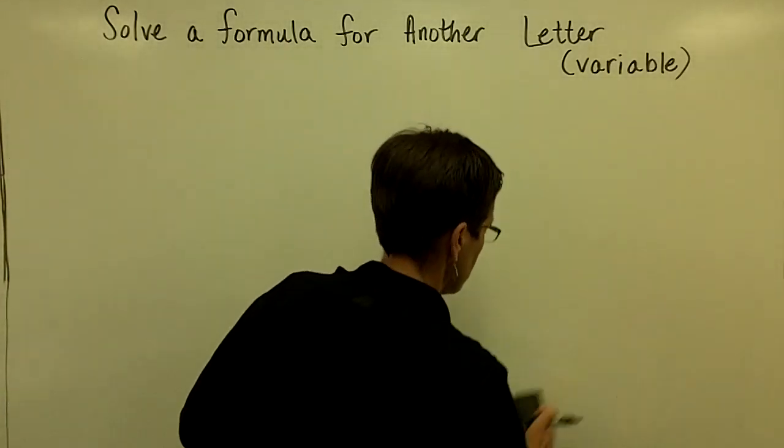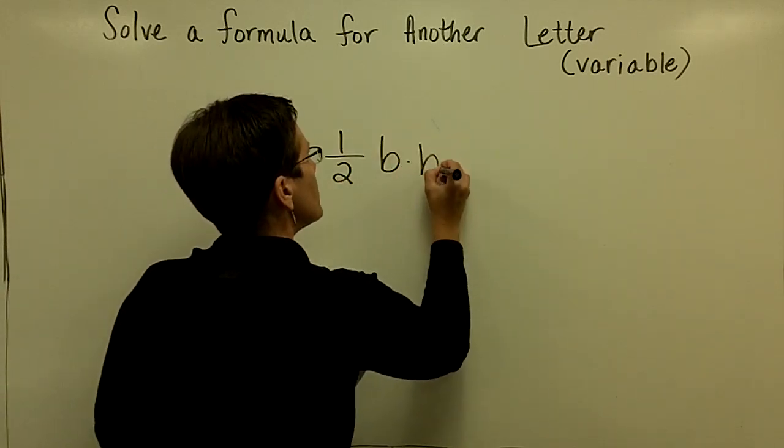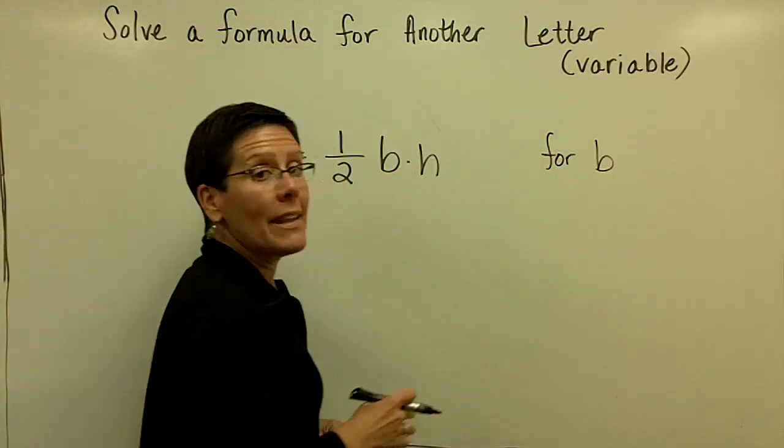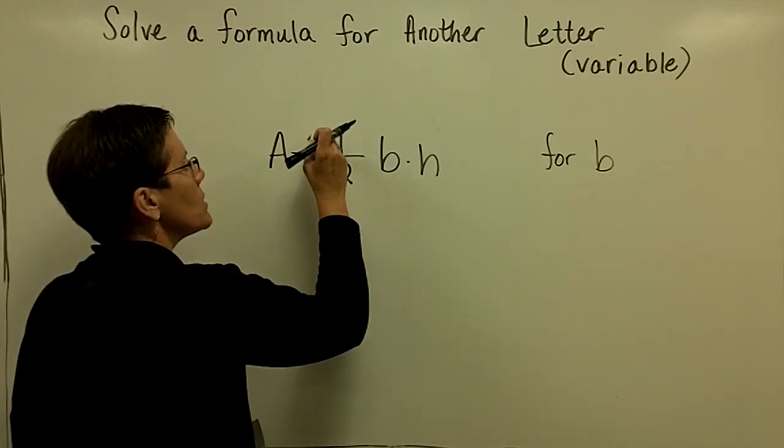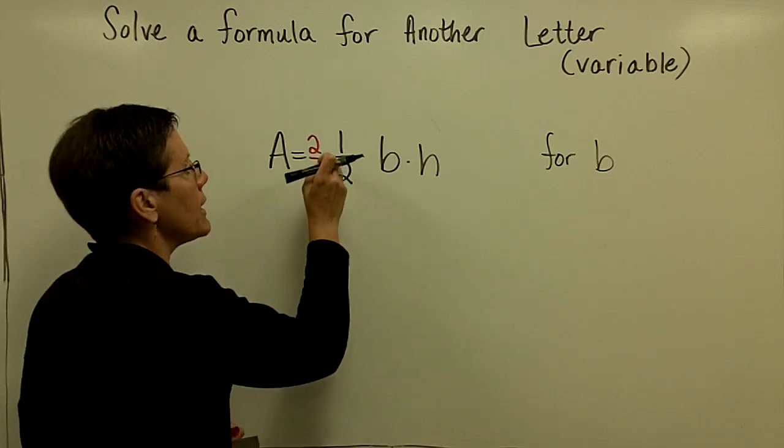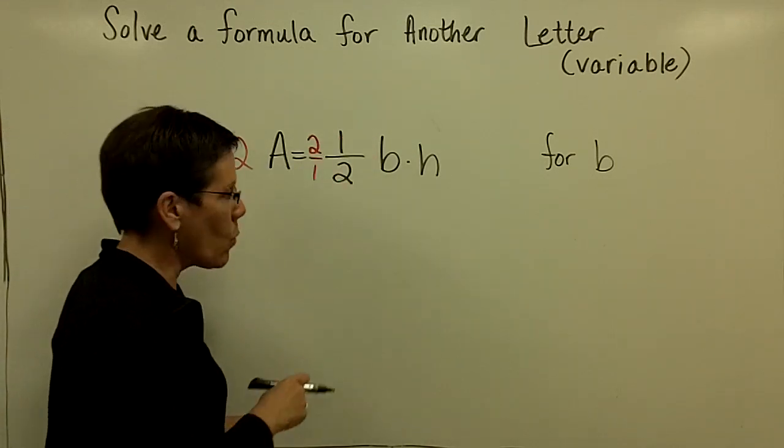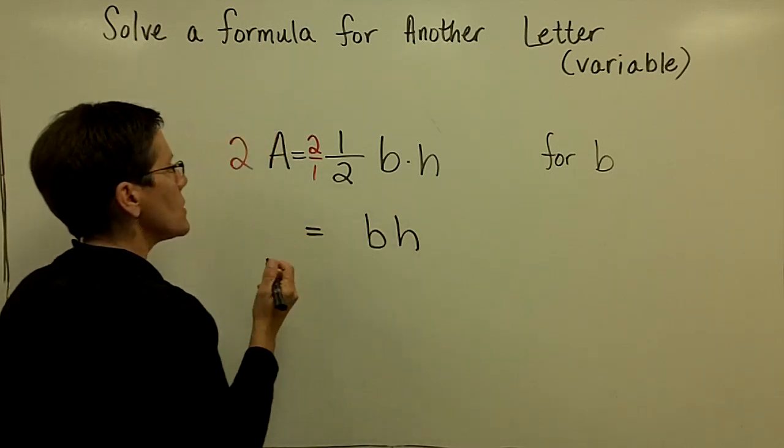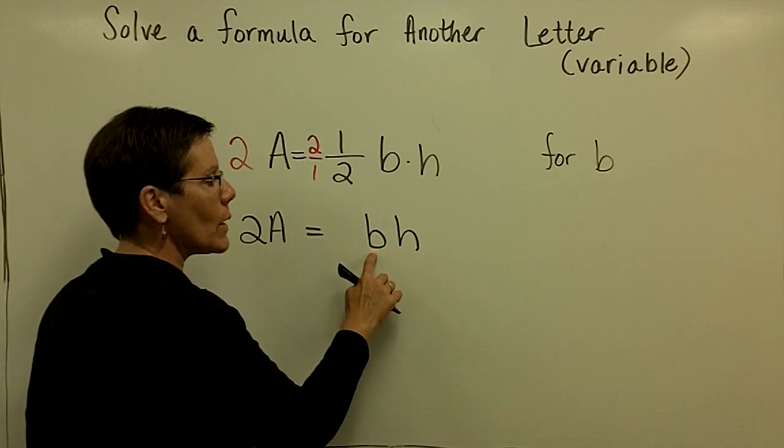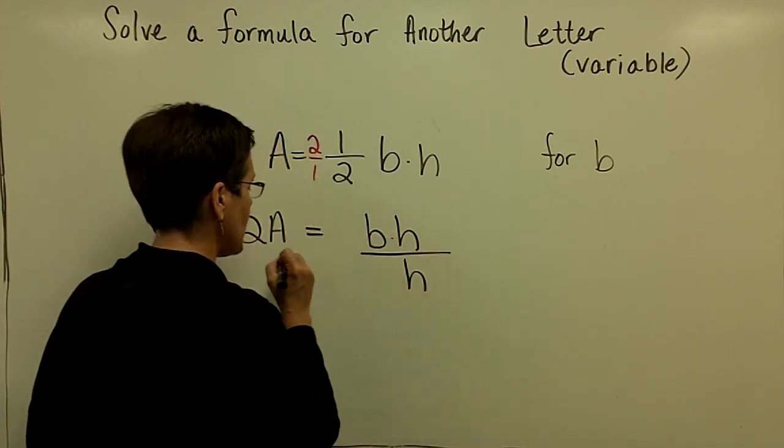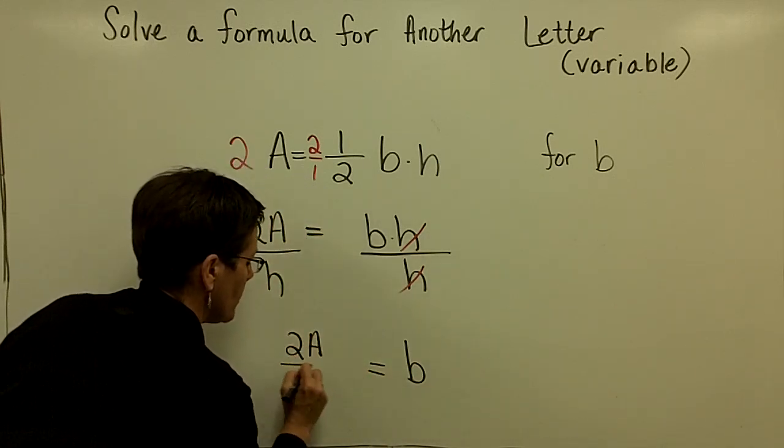One less problem. This has a fraction in it. I have the formula for the area of a triangle. It's found by taking one half of its base times its height. Let's solve this for the letter b. I think it's best to get rid of the fractional coefficient in front of the b times h, so I'm going to multiply both sides of this equation by 2. 2 over 1 times 1 over 2 is just 1, so I've gotten rid of the fraction on this right side. I have 2a on the left-hand side. I'm trying to isolate variable b. It's b times h, so to get rid of h, I have to divide it away. Finally, I have the base of the triangle is equal to twice its area divided by its height.